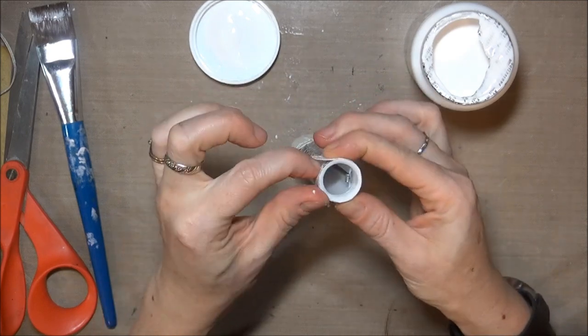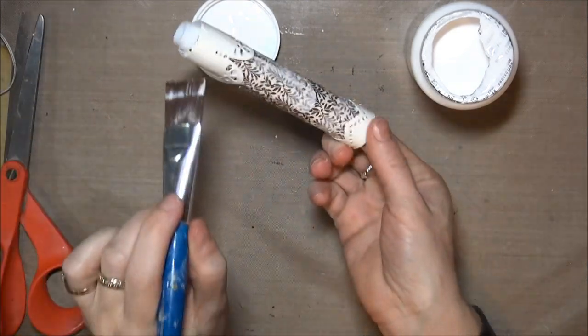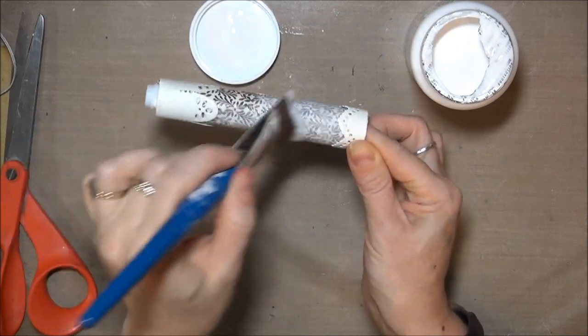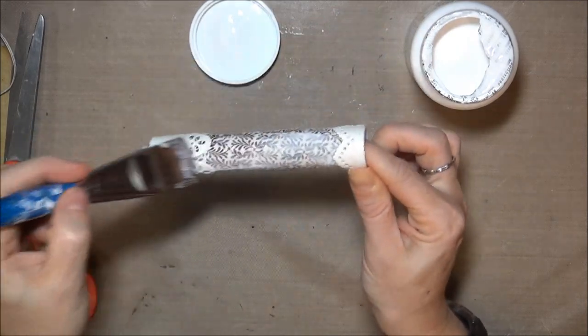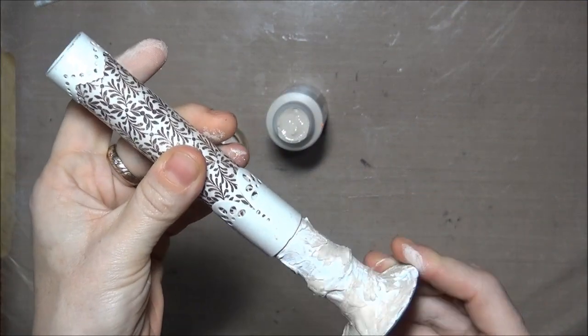Once you have your borders the way you want them, you can put a coat of Mod Podge over the whole surface of the candle to seal everything in and give it a nice shine. Leave that to dry completely, and when it's dry, you can reattach the candlestick to the base and add more decorations if you like.